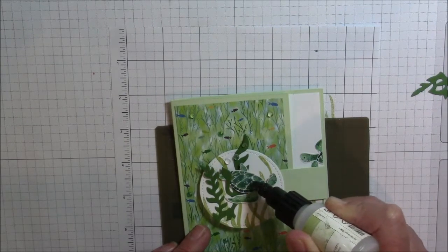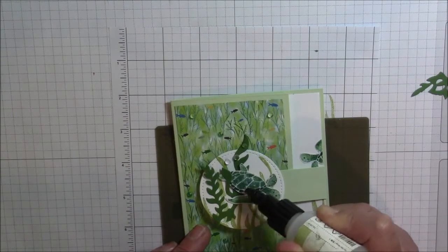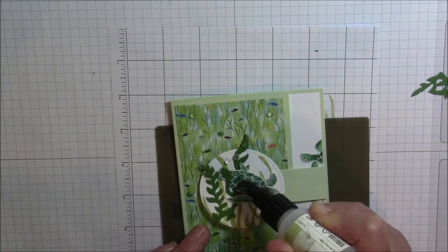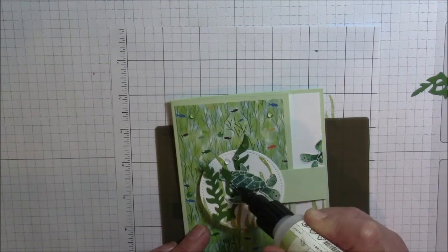As you can see I am just outlining those shell portions. I am using very little glue. You want to do this in layers because it does take a little bit to dry depending on the humidity.